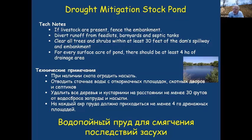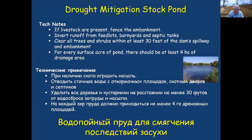If you have a pond with a dam spillway, prevent livestock from grazing and walking on the dam face, as trampling increases risk of overtopping and dam failure. Keep shrubs and trees off the dam face — their roots can create macropores that allow water to pipe through the dam. Remove any rodents or tunneling animals from an earthen spillway, as tunneling can also create potential breakage.